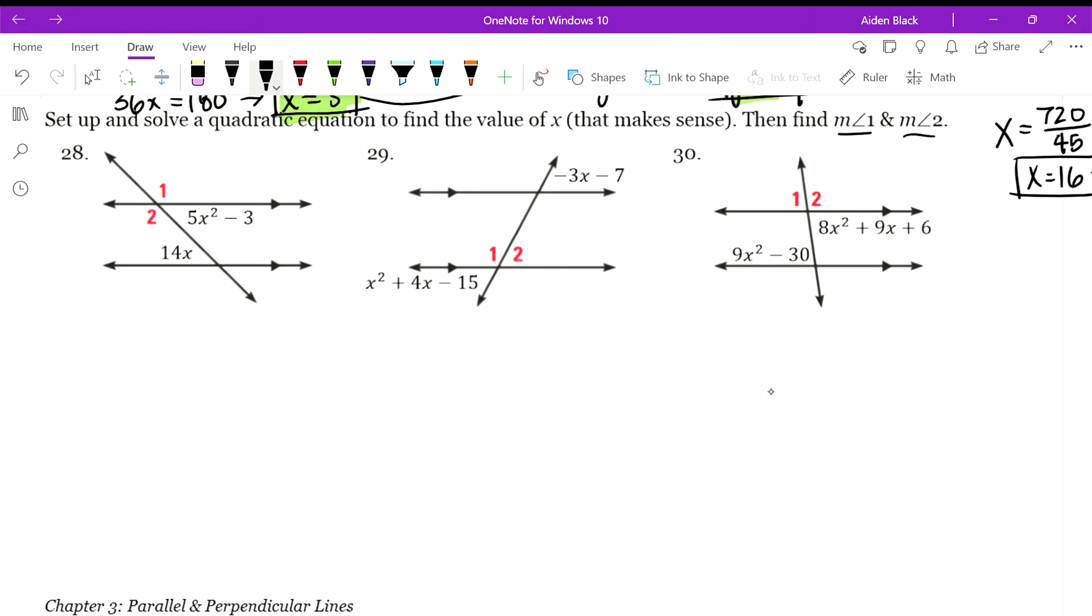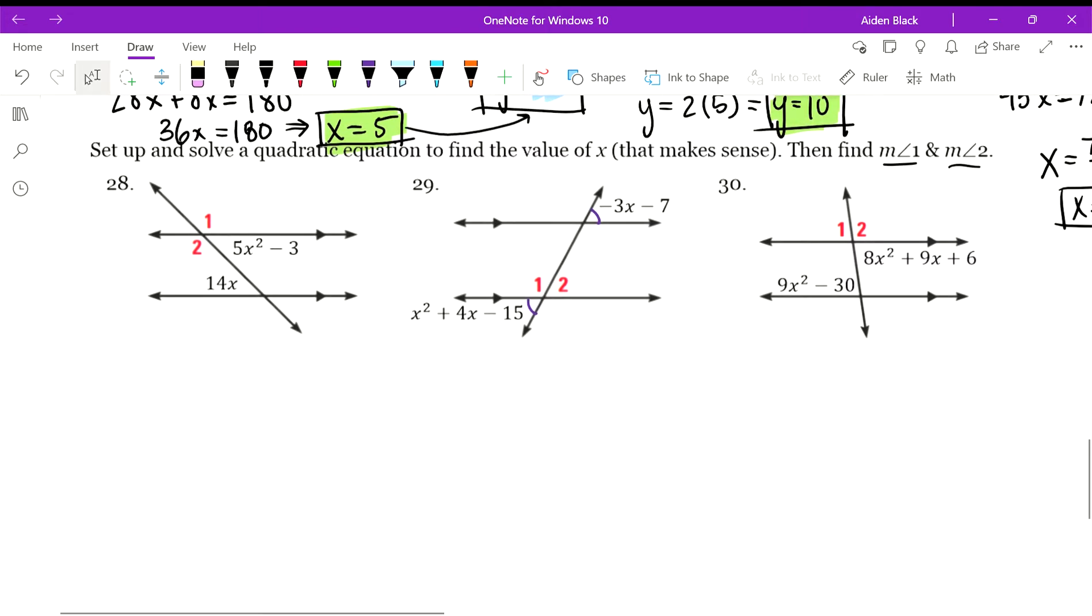Let's start with problem 29. Looking at these two angles with expressions provided, we consider the relationship between them. We know these are parallel lines, so if they're in this certain orientation, one down here bottom left, one up here top right, we know they're alternate interior angles or alternate exterior angles, so they're congruent. We can set up the following equation.